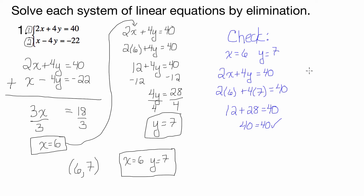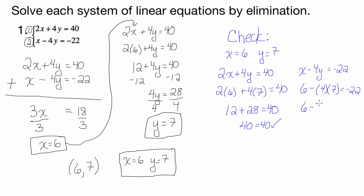Now let's check in equation number 2: x minus 4y equals negative 22. We have x equals 6, y equals 7. So 6 minus 4 times 7. That's 6 minus 28. Does that equal negative 22? It does — negative 22 equals negative 22. Perfect! So we know that's the right answer.